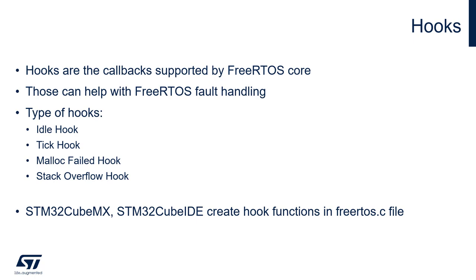There are four types of hooks in the current implementation of FreeRTOS. The idle hook is called within the idle task code at the end of its execution. The tick hook is called within the SysTick function. The malloc failed hook is called in case of memory allocation issues. The stack overflow hook is called in case of issues with the operating system stack. We will describe them one by one.